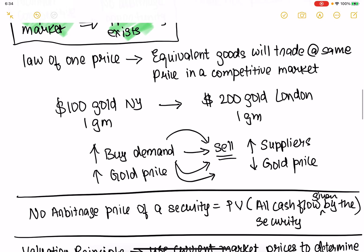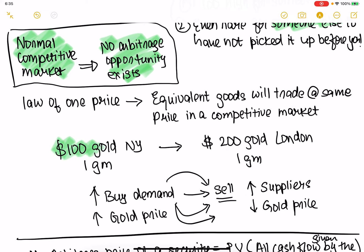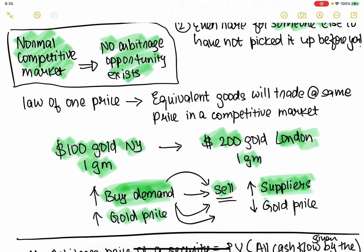This is explained by the law of one price. For example, if you can buy one gram of gold for $100 in New York and sell it instantly for $200 in London, you would do so. When you notice it, many more people notice it too. Demand goes up in New York, price goes up. More suppliers dump gold in London, supply increases, price goes down. Eventually both prices settle — say at $150. Equivalent goods will trade at the same price in a competitive market. So arbitrage opportunity doesn't exist when you buy and sell instantly.